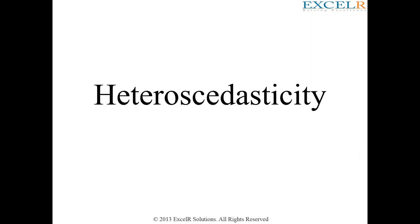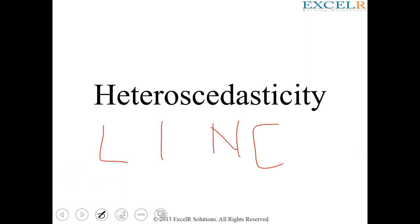What is heteroscedasticity? We have an assumption in linear regression, and there is a small abbreviation called LINE. L stands for linear, I stands for independent, N stands for normality, and E stands for equal variance. Heteroscedasticity is related to this E.